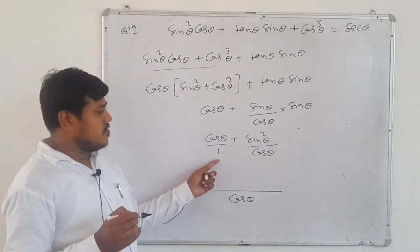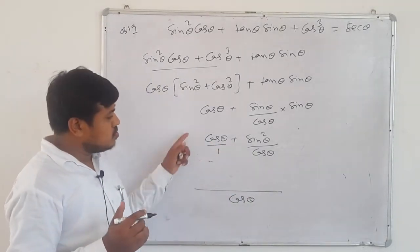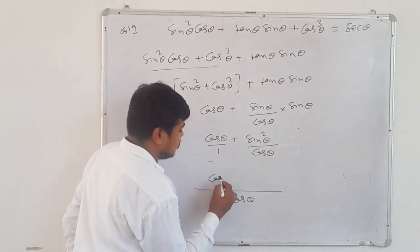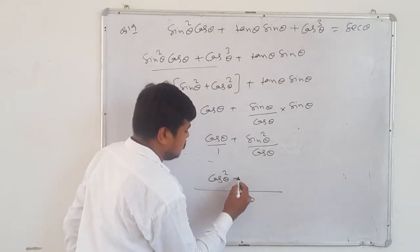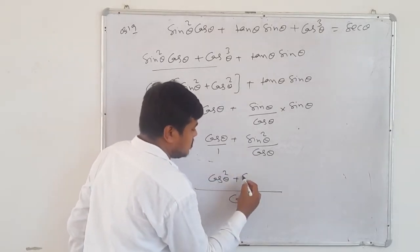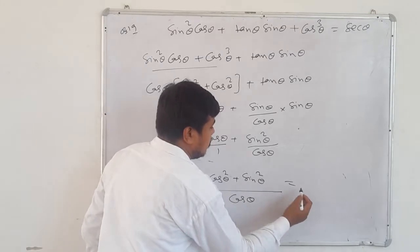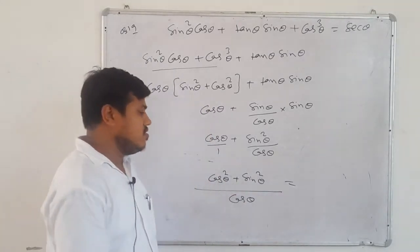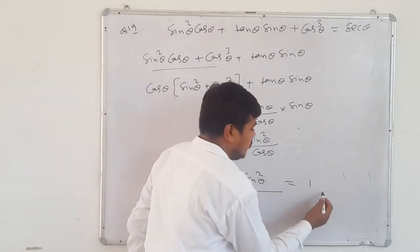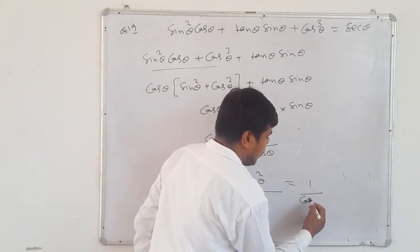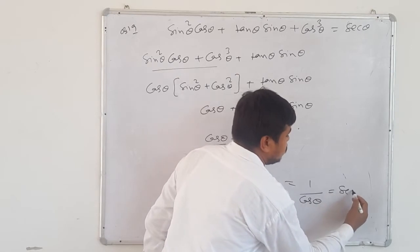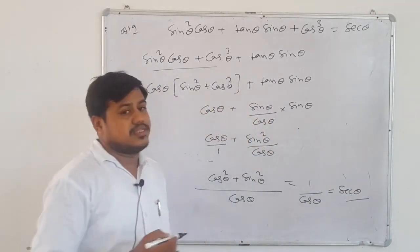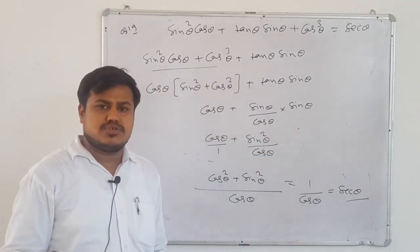After LCM: cos²θ + sin²θ. And cos²θ + sin²θ = 1. So we get 1 upon cos θ. And 1/cos θ is written as sec θ. Easy question. Hence proved.